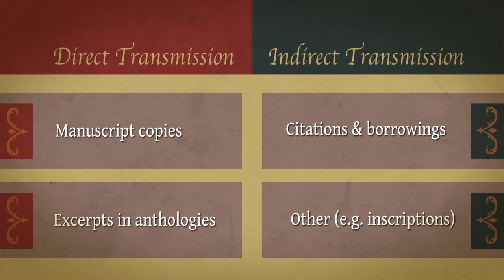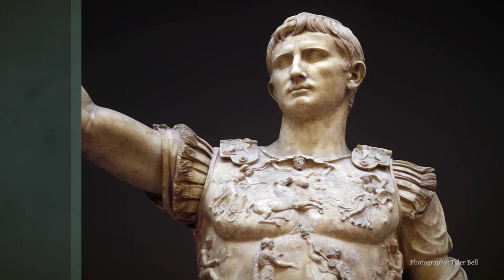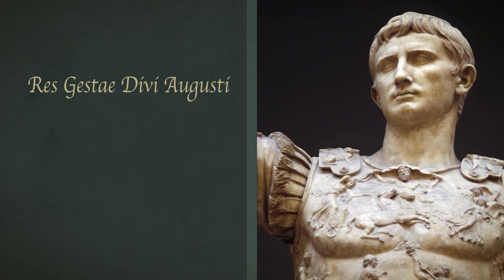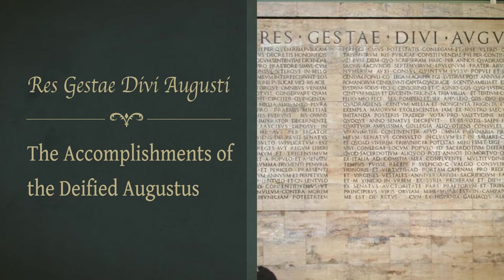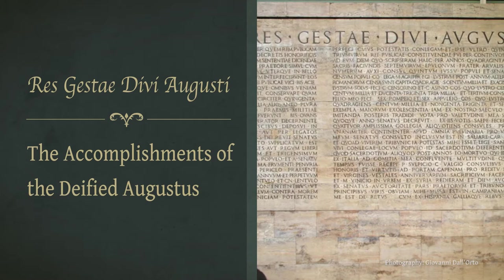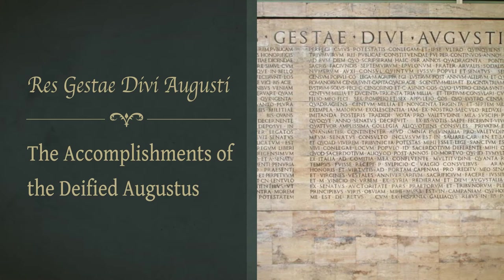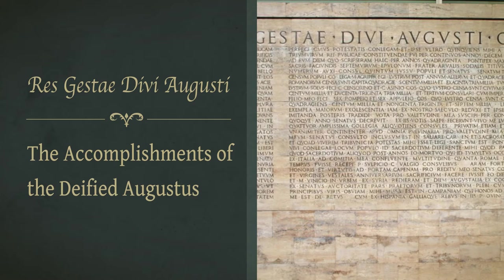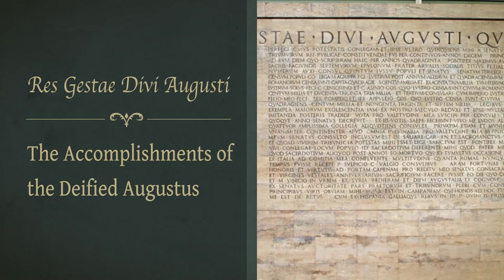There are other sources of data as well — for example, inscriptions on stone or metal. The Emperor Augustus, who is the subject of Suetonius' longest life, at the very end of his days left a very long inscription called the Res Gestae Divi Augusti — the accomplishments of the deified Augustus — which he instructed to be set up in all areas of the Empire. It happens that Suetonius used that inscription as a source, and it's very often possible to compare the text of the Res Gestae with the text of Suetonius and bring the one to bear on the other in order to solve a textual difficulty.